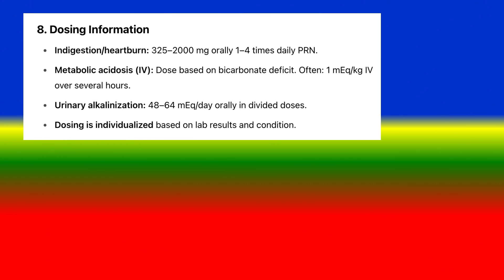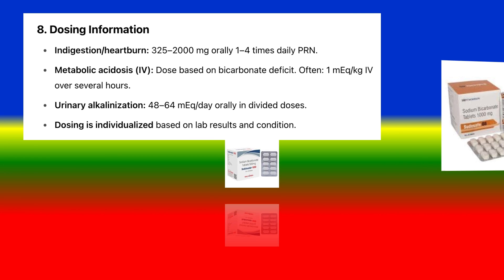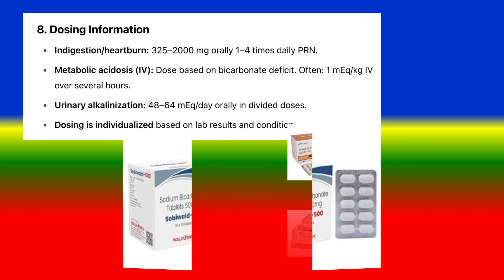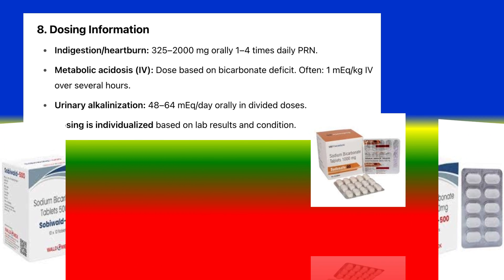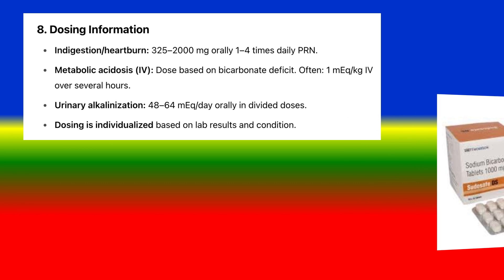Dosing information: Indigestion and heartburn — 325 to 2,000 mg orally, up to 4 times daily as needed. Metabolic acidosis (IV) — dose based on bicarbonate deficit, often 1 mEq/kg IV over several hours. Urinary alkalinization — 48 to 64 mEq per day orally in divided doses. Dosing is individualized based on lab results and condition.